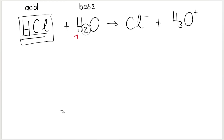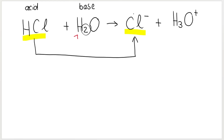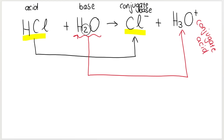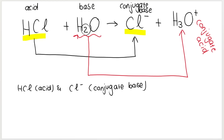So essentially what is happening here: I've got an acid, HCl. What it becomes, what it forms, is Cl minus. These two are paired together — if HCl is my acid, then Cl minus is what we call the conjugate base. And then I've got my base, water, over here. Once it accepts the proton, it forms what we call the conjugate acid, H3O plus. So if asked to list the conjugate acid-base pairs, you would say: HCl (acid) and its conjugate base is Cl minus — that's my first pair. My second pair would be H2O, which is my base, and H3O plus, the hydronium ion, which is my conjugate acid.